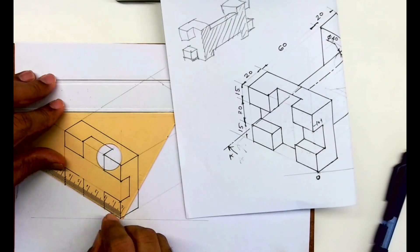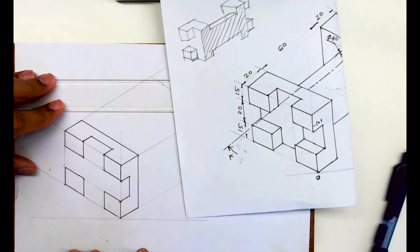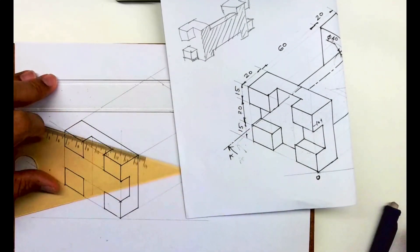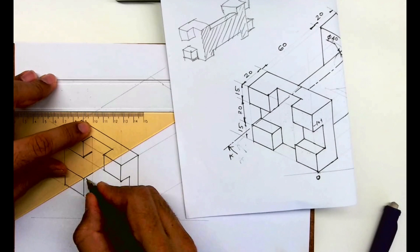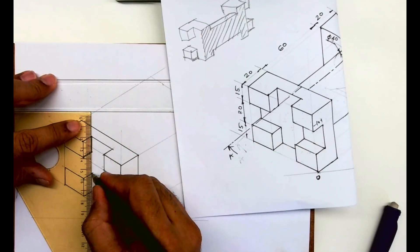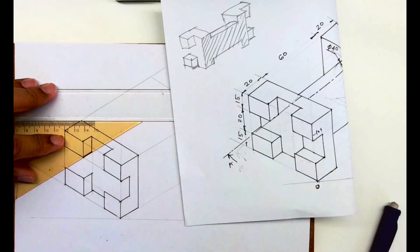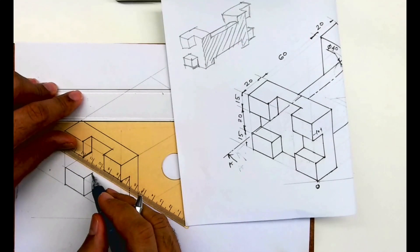Once we get this rectangle, we have to show depth which is 10. See, like this. We have to just take all the lines inside by 10 and we'll get this.